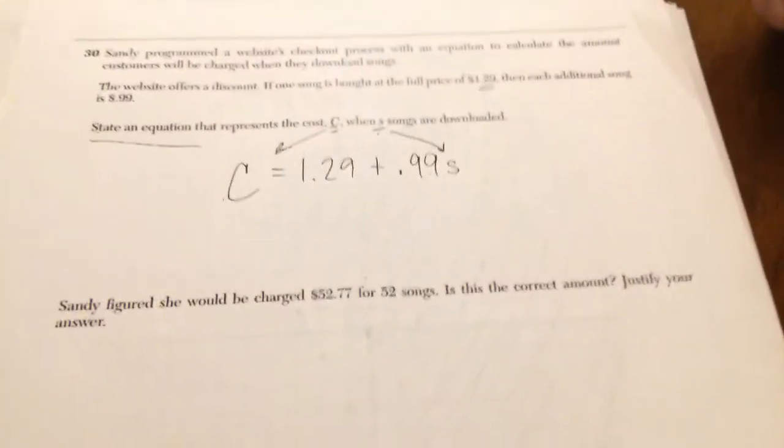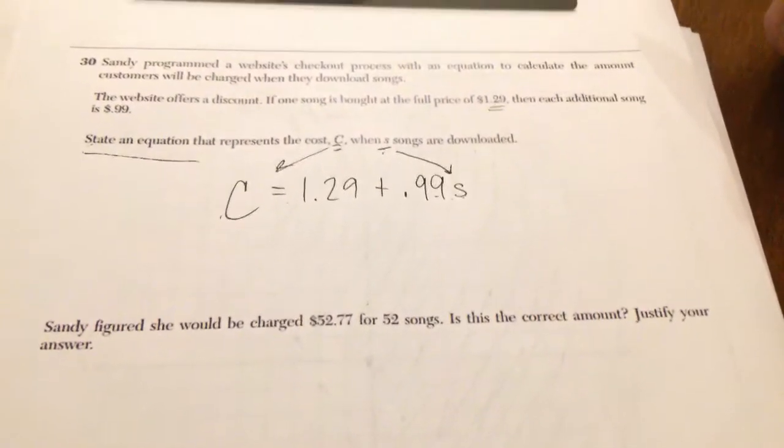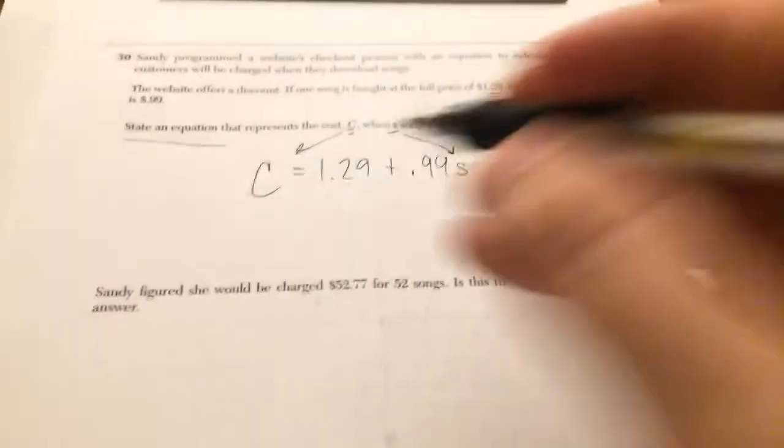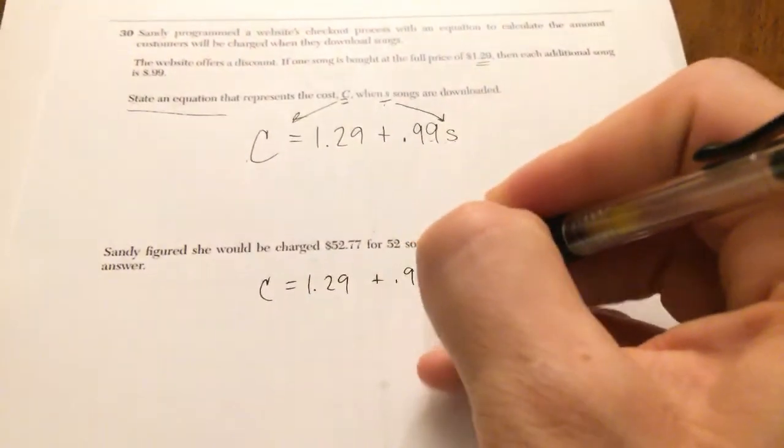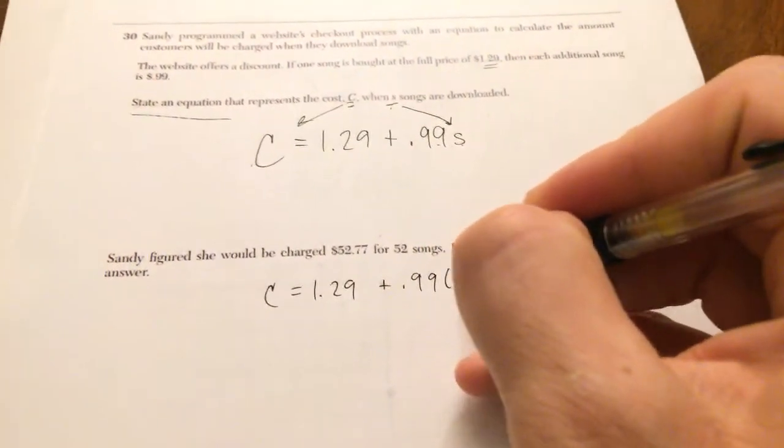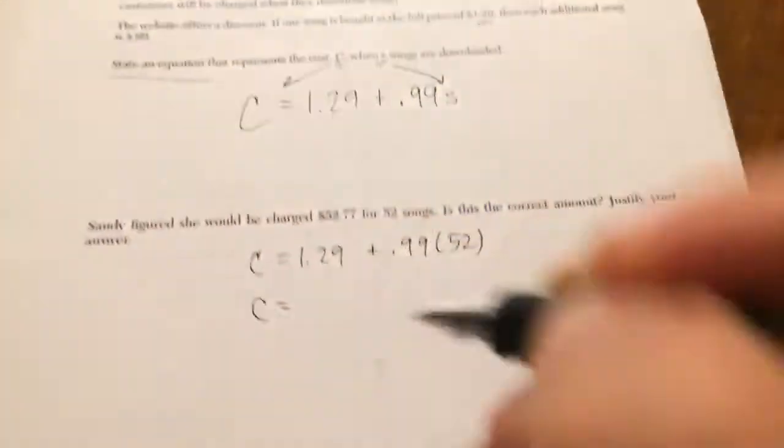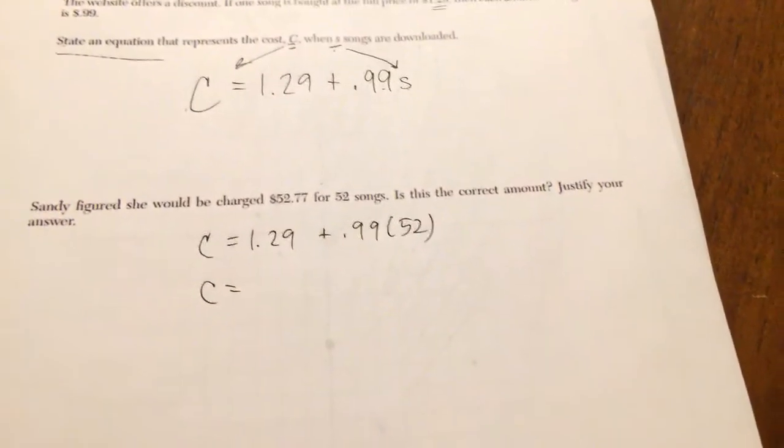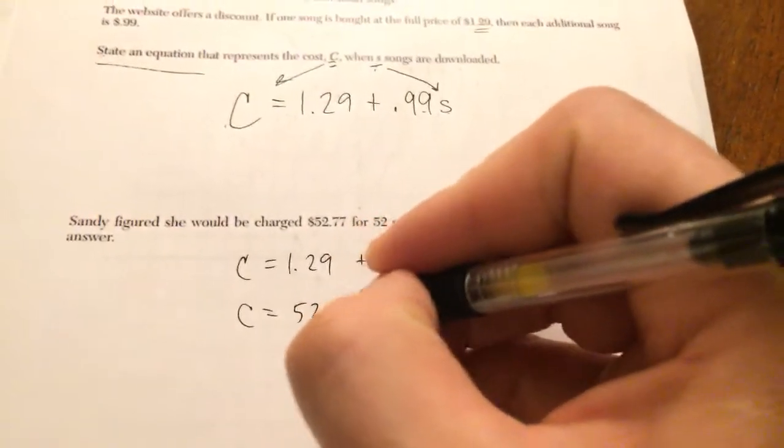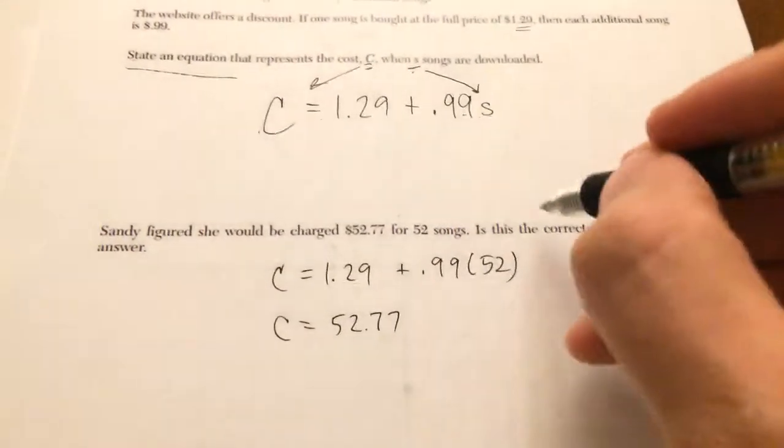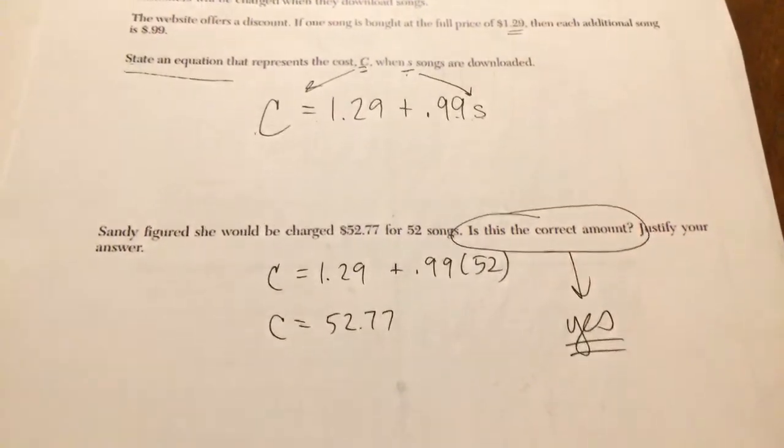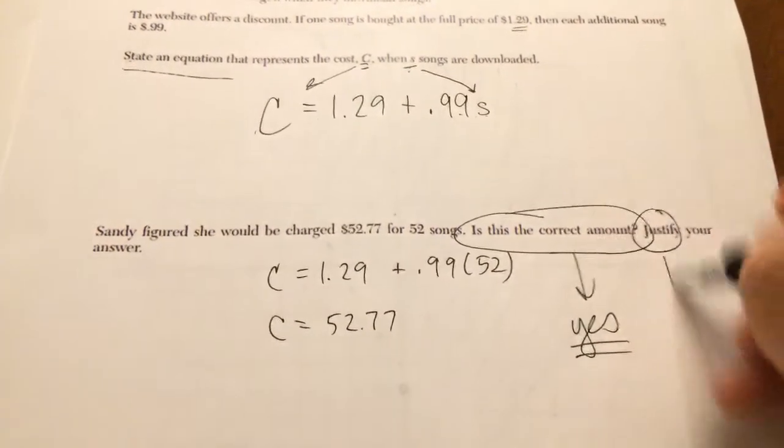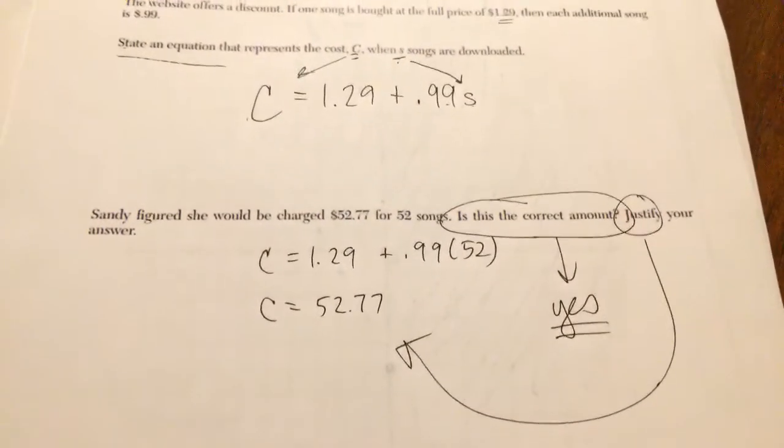The next part says, Sandy figured she would be charged $52.77 for 52 songs. Is this correct amount? So what I'm going to do is plug in 52 for S and simplify this and see what my cost is. Using my calculator, I get $52.77. Now, answer the question, is this correct amount? Yes. Justify means you can show work. There's my work. My work is done.